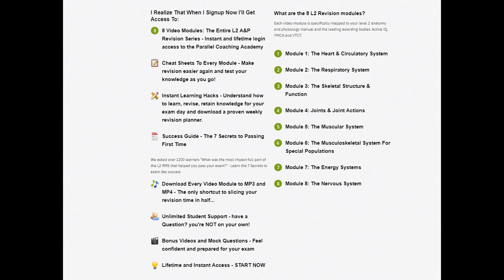So let's explain a little bit more about the Level 2 Anatomy and Physiology Revision Mastery Series. When you sign up, you get lifetime and instant access to all eight video modules in HD. These video tutorial modules include heart and circulatory system, respiratory system, skeletal structure and function, joints and joint actions, muscular system, the musculoskeletal system for special populations, energy systems and nervous system.